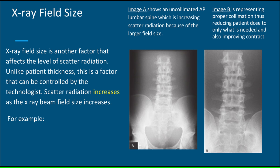X-ray field size is another factor that affects the level of scatter radiation. Unlike patient thickness, this is a factor that can be controlled by the technologist. Scatter radiation increases as the x-ray beam field size increases. For example, image A shows an uncollimated AP lumbar spine, which is increasing scatter radiation because of the larger field size. In image B, proper collimation is represented, thus reducing patient dose to only what is needed and also improving contrast.